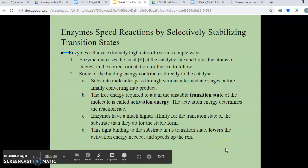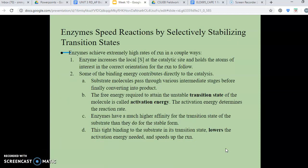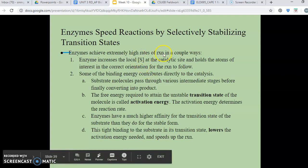So enzymes speed the reactions by selectively stabilizing the transition states. So in the earlier slide, it said, we talked about how enzymes work by lowering the activation energy. And then I told you that we would talk a little bit more specifically about how. So as you saw earlier, enzymes are extremely fast, right? And they achieve these extremely high rates of reactions in a few different ways.